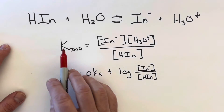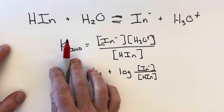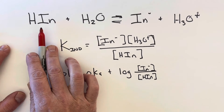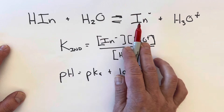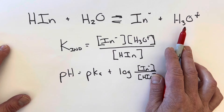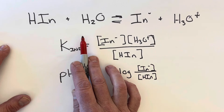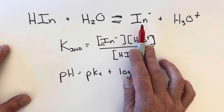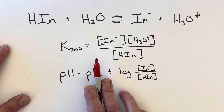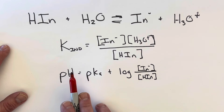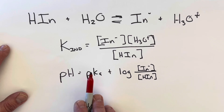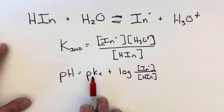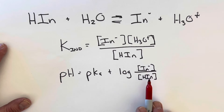Let's talk some theory. Acid-base indicators have to be weak acids or weak bases. In this case, we'll use a weak acid — H-indicator — that's just short for whatever the complex molecule is. You put it in water and it makes a little bit of its conjugate base and a little bit of hydronium ion. Because it's a weak acid, it has an equilibrium constant we'll call K-indicator, equal to the concentration of those products over the concentration of the reactants. It can also create a buffer system with itself, which is why we can use the Henderson-Hasselbalch equation: pH equals pKa plus the log of the indicator anion over the acid.